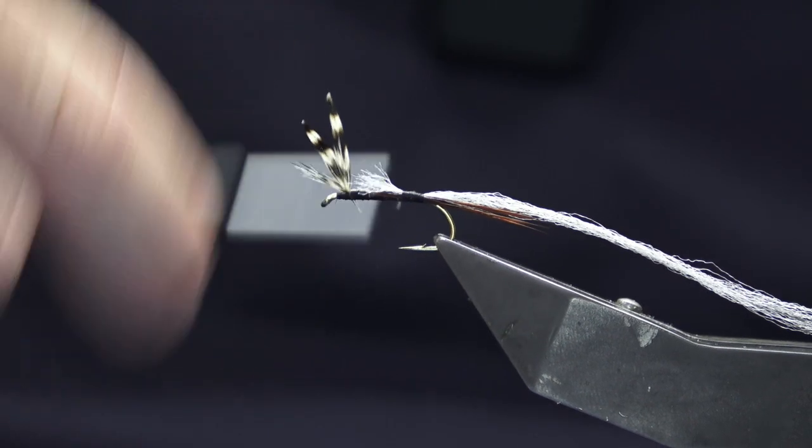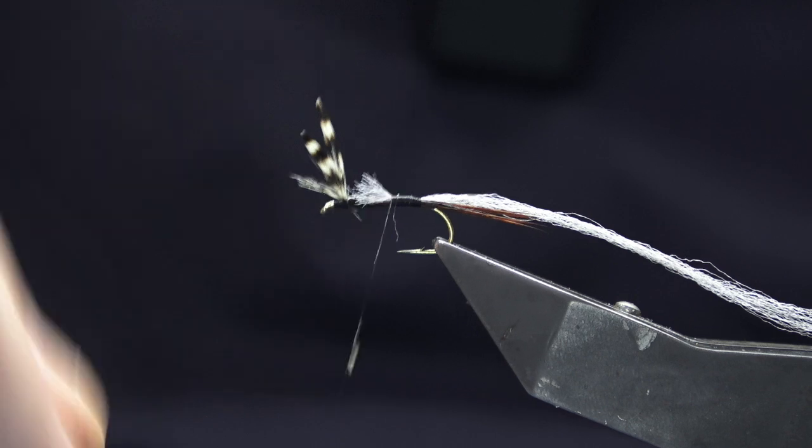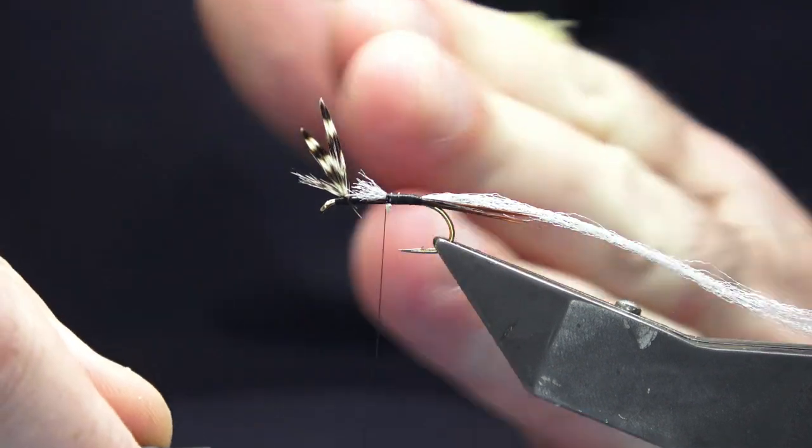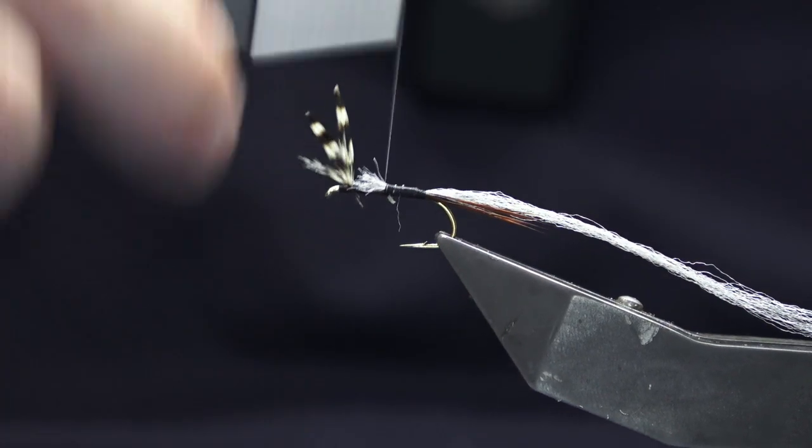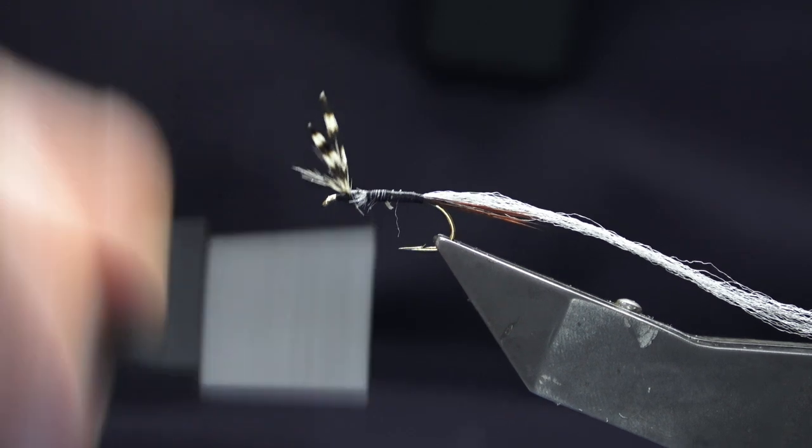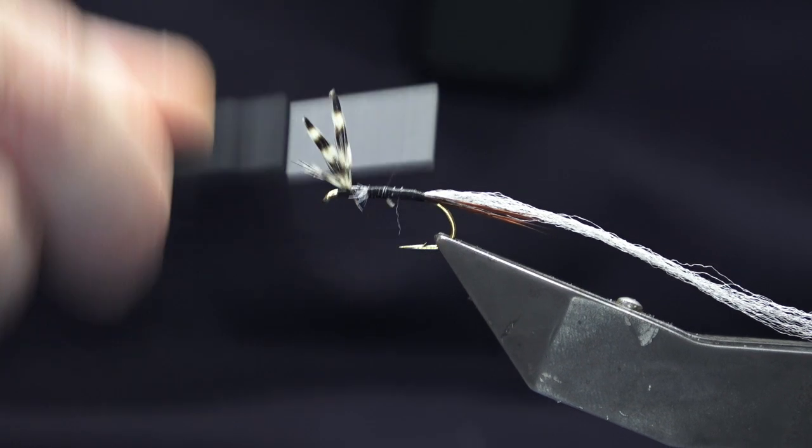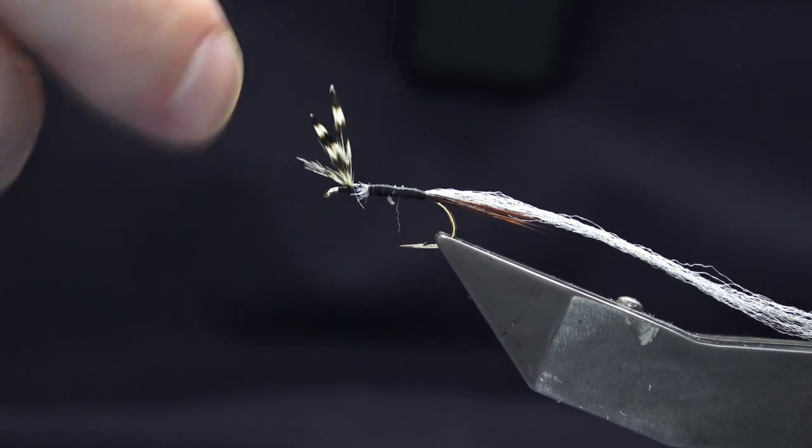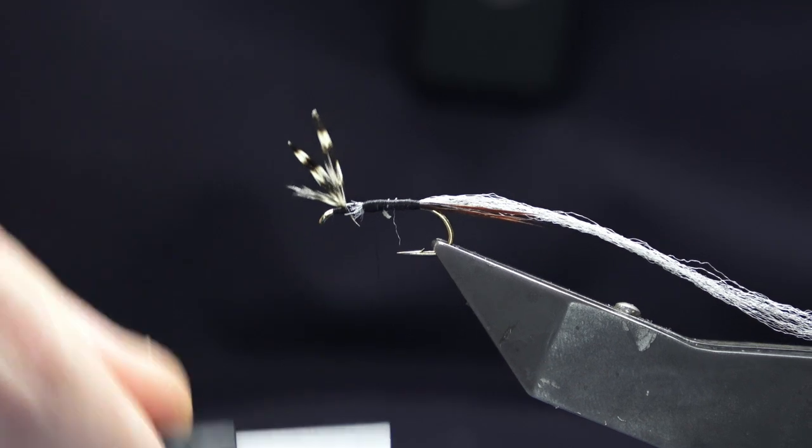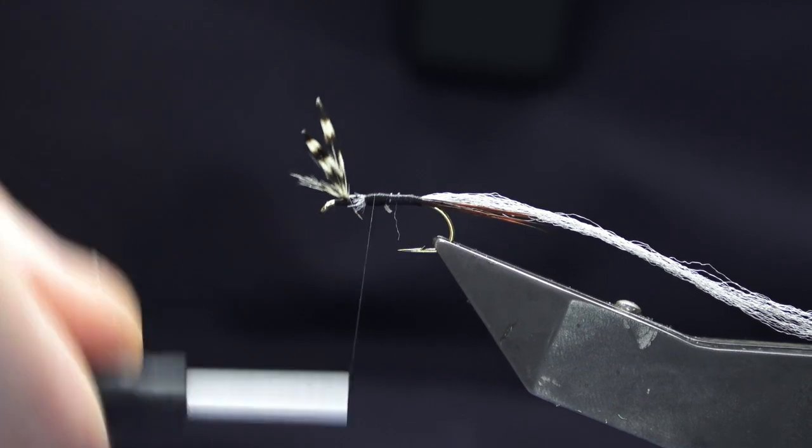Because you're not going to rib this fly, the power post sometimes has a tendency to slide back. What I want to do is put a bit of a taper up at the top of the body here.